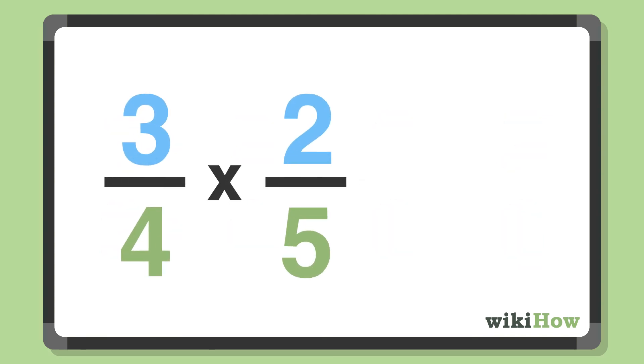Multiplying fractions is simple. Just multiply the numerators by the numerators, and the denominators by the denominators.